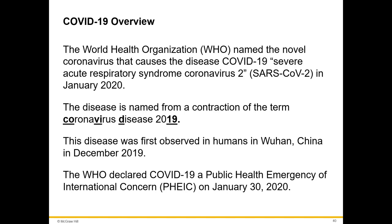This disease was first observed in humans in Wuhan, China in December of 2019, though emerging data suggests it may have been around a little bit before then, possibly even in the United States in December 2019. The WHO declared COVID-19 a public health emergency of international concern on January 30, 2020. It takes time to evaluate data — confirming a severe infection with a high attack rate — before making such a claim.